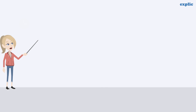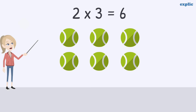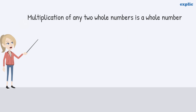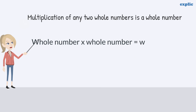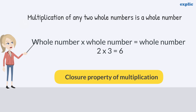Multiplication of 2 and 3 is 6, which is a whole number. Therefore, the multiplication of any two whole numbers is a whole number. This is called the closure property of multiplication.